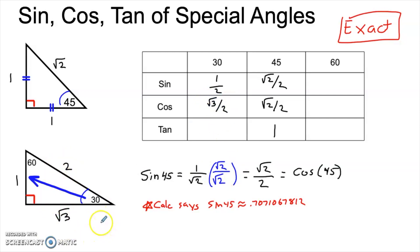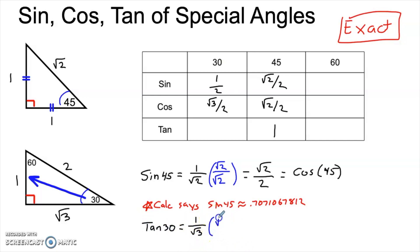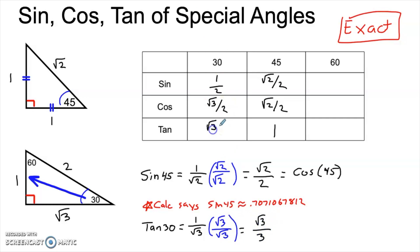Tangent is opposite over adjacent, so across from 30 is 1, and adjacent is the square root of 3, meaning the tangent of 30 is 1 over the square root of 3. There's another radical in the denominator, so we rationalize: multiplying numerator and denominator by the square root of 3 gives us a value of the square root of 3 divided by 3.